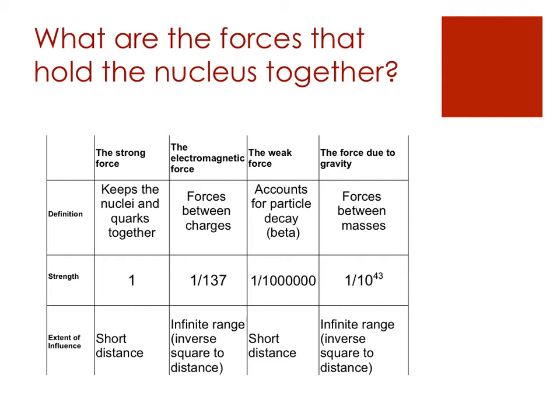The strong force inside the nucleus is the one that holds quarks together as well as the nuclei — keeping the protons, which are all positively charged, so close together. It's extremely strong but acts over a very short distance. That's why if we have too many neutrons in the nucleus it will start to become unstable, or likewise if we don't have enough.